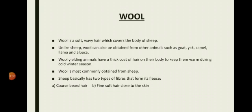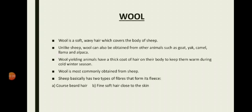Wool is a soft, wavy hair which covers the body of sheep. Basically, wool is a fiber mostly obtained from sheep, but it is also obtained from goat, mountainous goat, yak, camel, llama, and alpaca. Wool is a modified form of hair that grows with a waviness, and because of this waviness, woolen fabrics have a greater bulk. The woolen fabric we wear during winter keeps us warm because it can trap more air. Air is a poor conductor of heat, so the air trapped in the wool prevents body heat from being lost to cold surroundings.